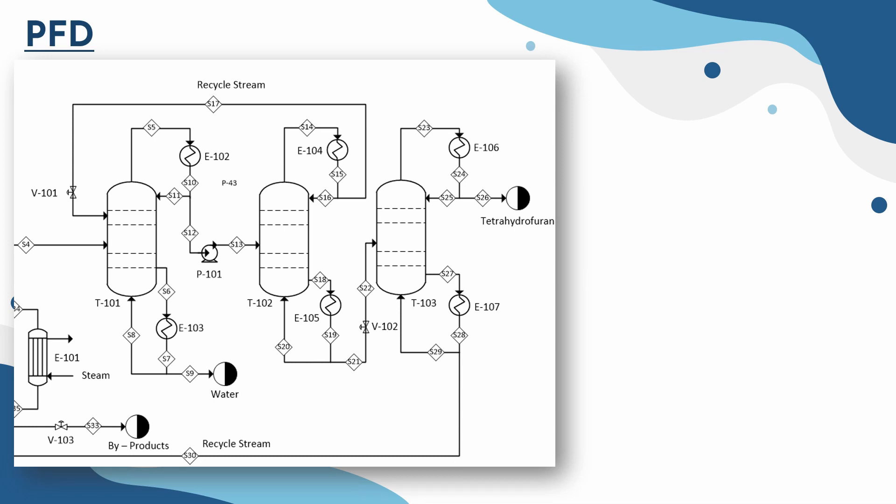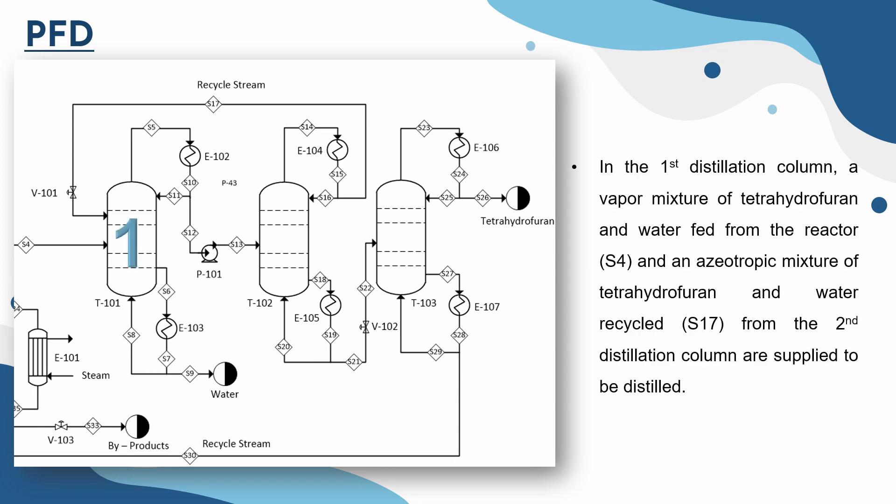In the first distillation column, a vapor mixture of tetrahydrofuran and water fed from the reactor (stream 4) and an azeotropic mixture of tetrahydrofuran and water recycled (stream 17) from the second distillation column are supplied to be distilled. Water is being removed at the bottom of the column.